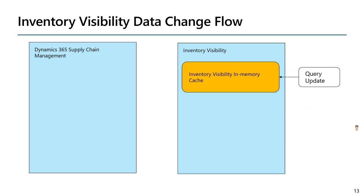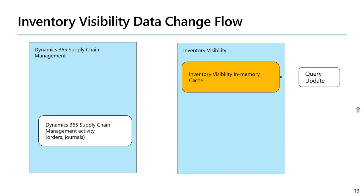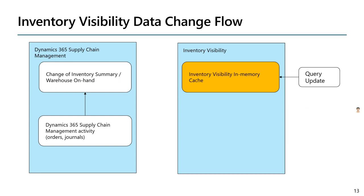Let's use an example of Dynamics 365 Supply Chain Management to illustrate how a data change in your ERP system connected to Inventory Visibility Service propagates. At the center of Inventory Visibility, we have a high-performance in-memory cache to store data in memory. Think of a change in D365 SCM — whether it is an order, an inventory journal, or a customized activity. The change is captured by Dynamics 365, marking it as being sent to Inventory Visibility. There is a recurrent batch job that periodically pushes such data to Inventory Visibility, so Inventory Visibility will always have almost up-to-date inventory data from Dynamics 365 Supply Chain Management.